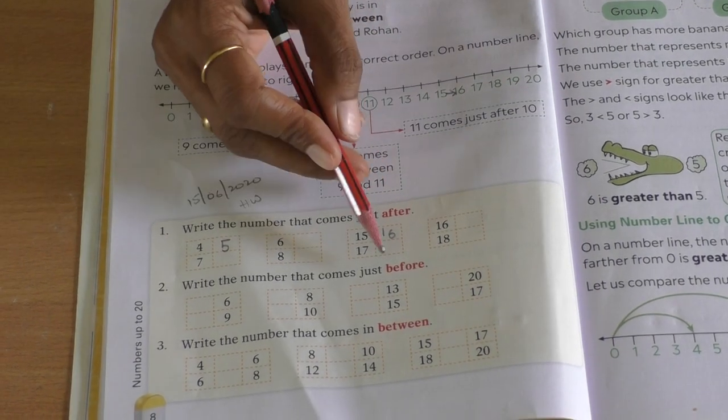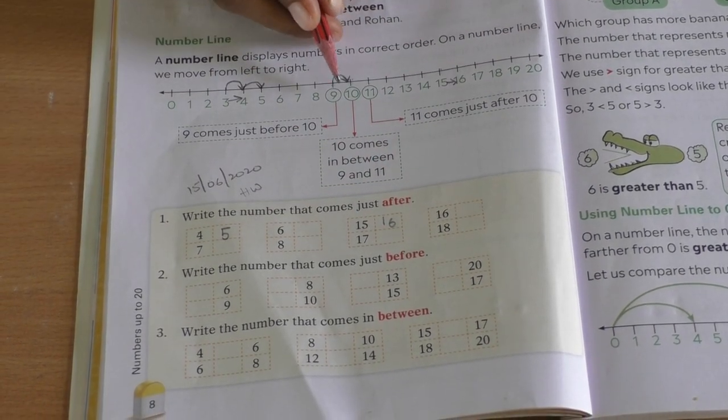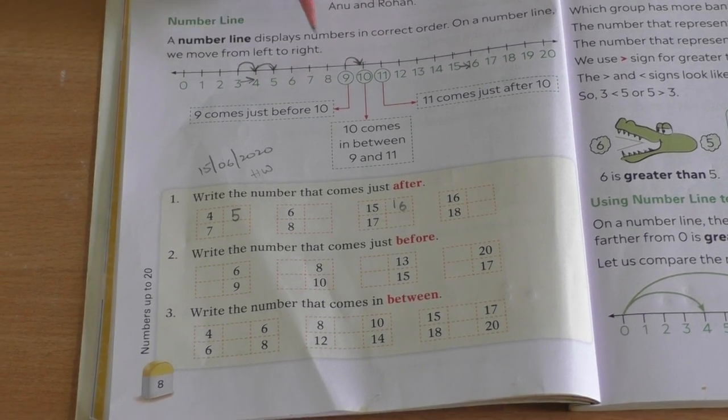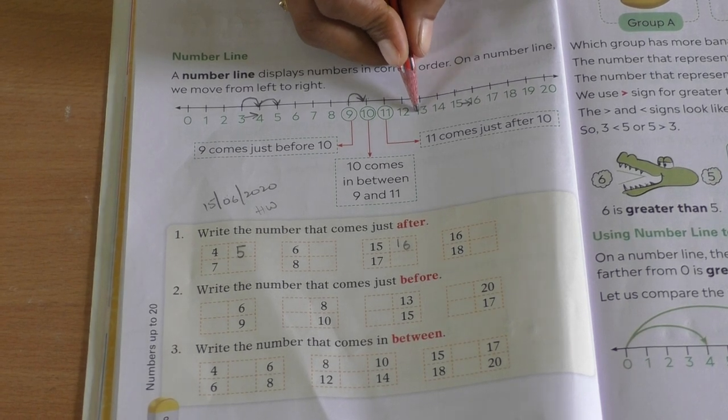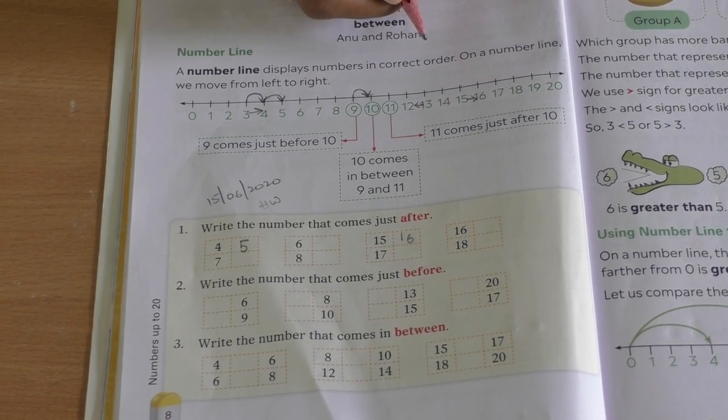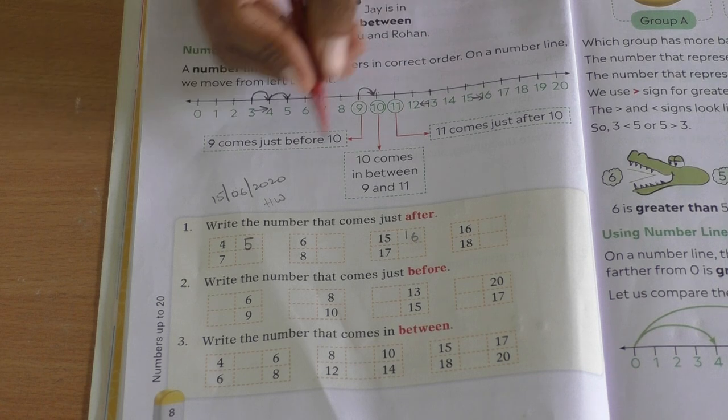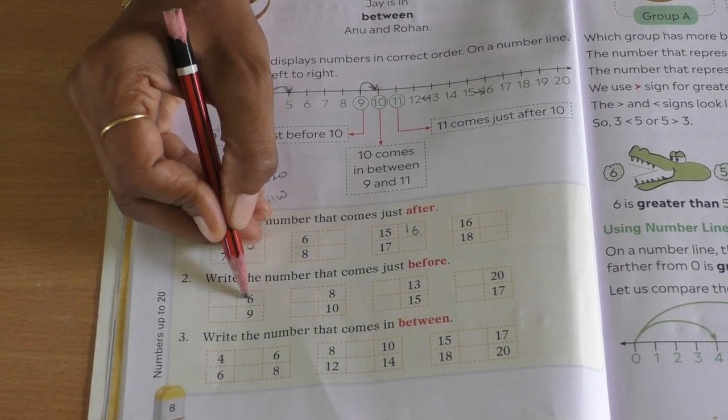Similarly, when we go to before number, the number which comes in front of the given number. The number if I am taking is 13, which comes in front is 12 in the number line. So here they have asked us for 6.